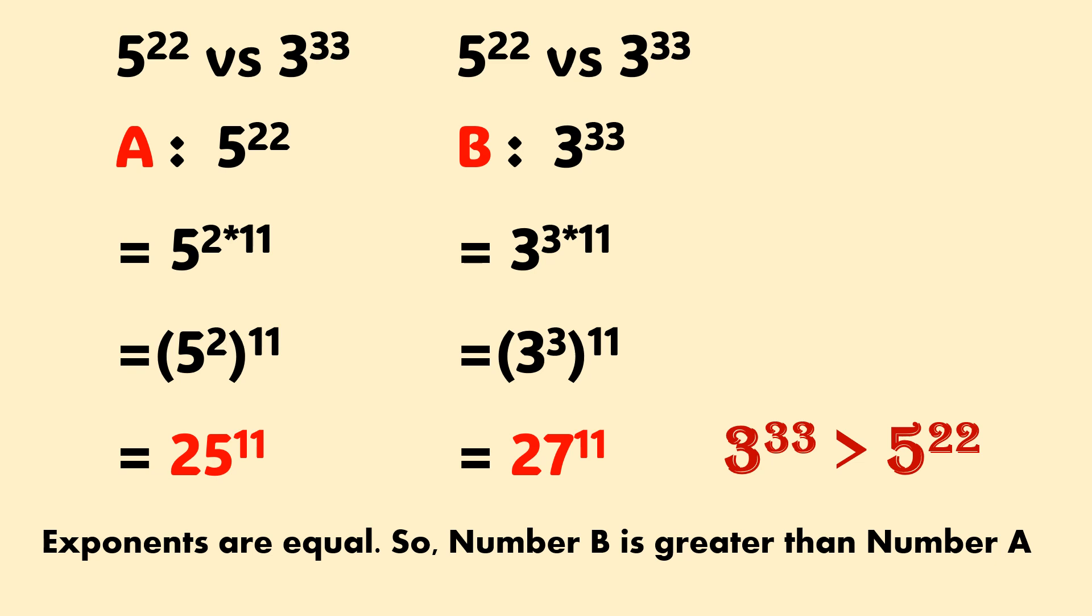We have to compare 5 power 22 versus 3 power 33. Look at column A. 5 power 22. Exponent 22 may be written as 2 into 11. So we get 5 square, whole power 11, which is equal to 25 power 11.